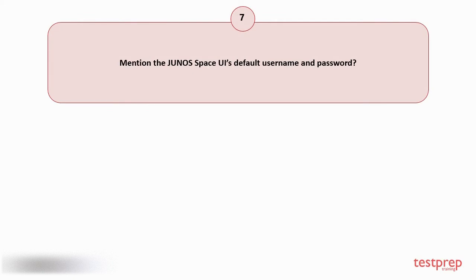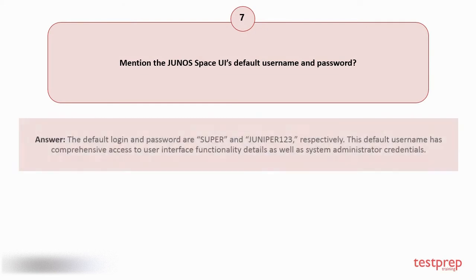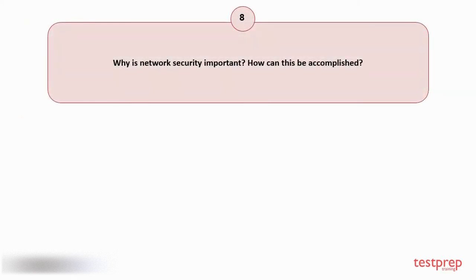Question number seven: Mention the Junos Space UI's default username and password. Your answer is: The default login and password are 'super' and 'juniper123' respectively. This default username has comprehensive access to user interface functionality details as well as system administrator credentials.